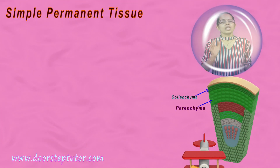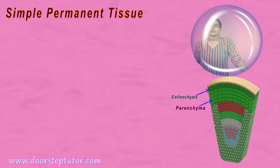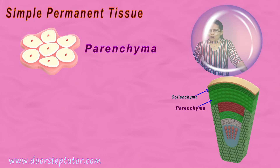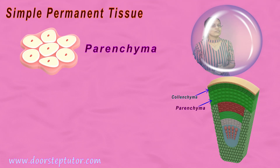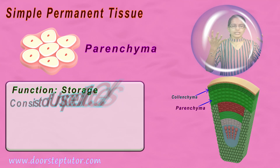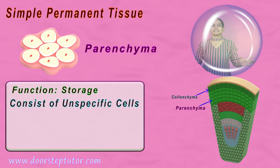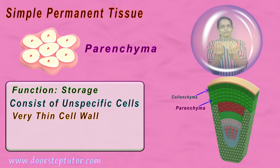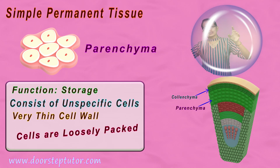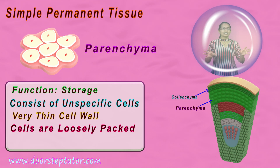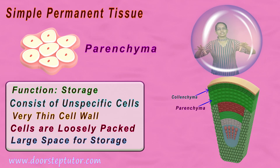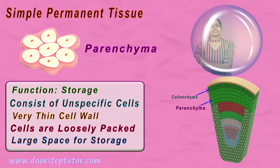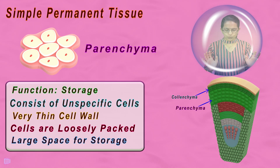This is a simple permanent tissue. Let's first talk about parenchyma. Parenchyma is the most common of those. The most simplest function is storage. It consists of unspecialized, unspecific cells with a very thin cell wall. Most of the cells are loosely packed and they have large spaces for storage. Parenchyma — the best function you can explain is storage.